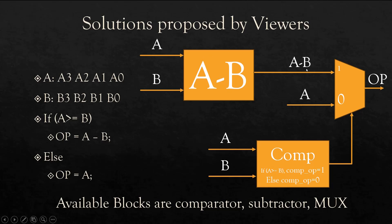And to implement this subtraction, we need a subtractor. So we will apply A and B to the input of subtractor, and it will give us A minus B at its output. Now if A is greater than or equal to B, this will give us output as one.